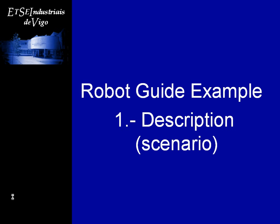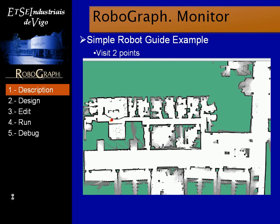First, we will describe the robot guide example and the scenario where it is going to take place. This is the map of our department where we are going to set up the example. The robot is going to be placed at the start position. Then it should go to point 1, change the facial expression, reproduce an audio file, and change again the facial expression. After visiting point 1, the robot should visit point 2 and reproduce a similar sequence.